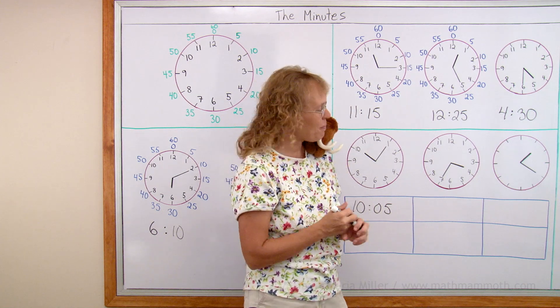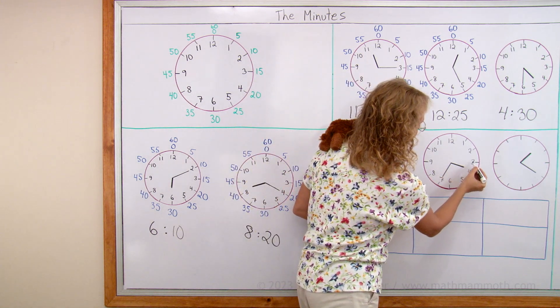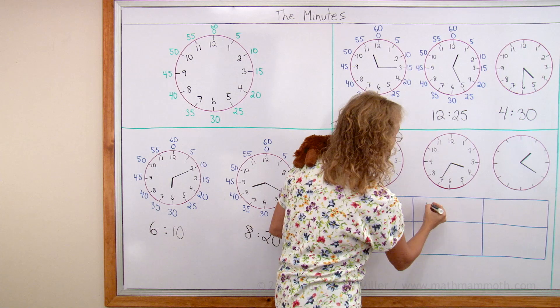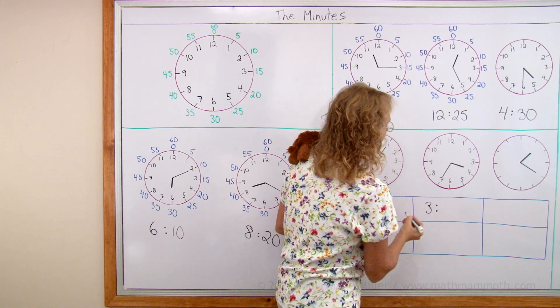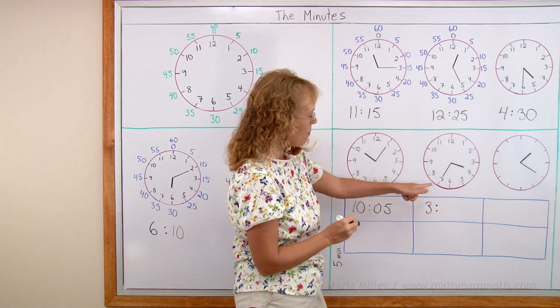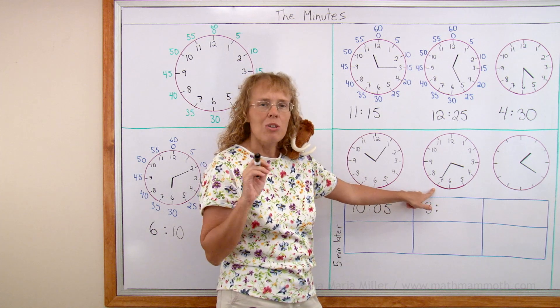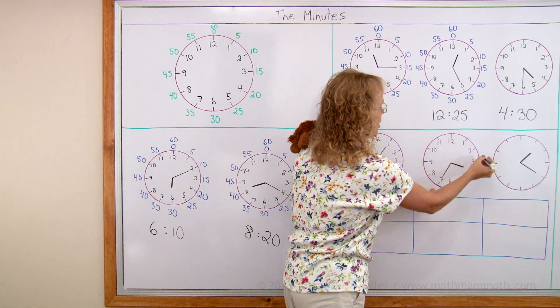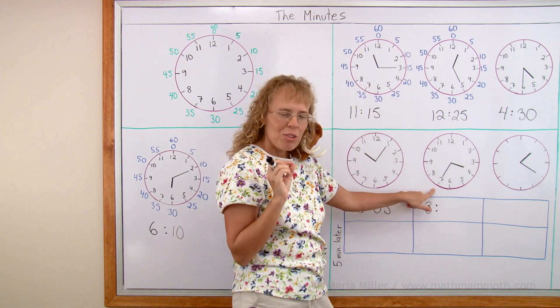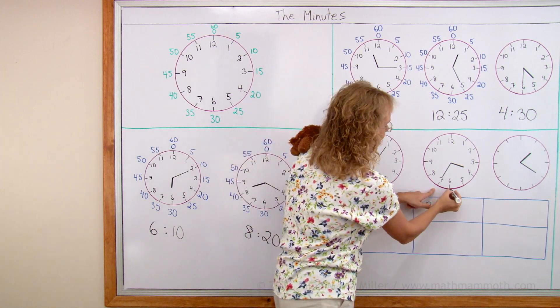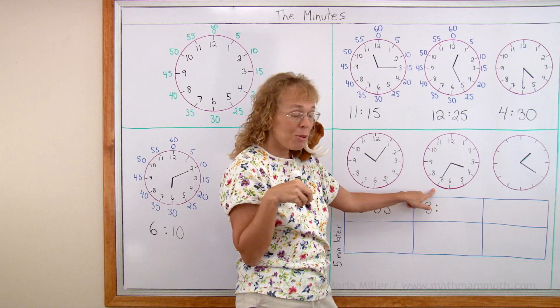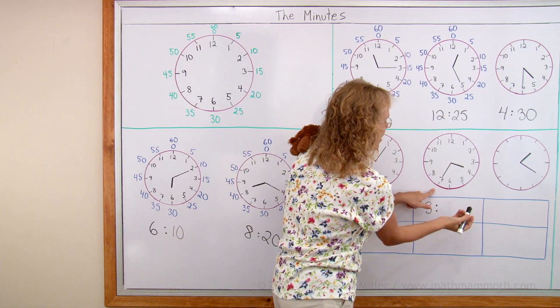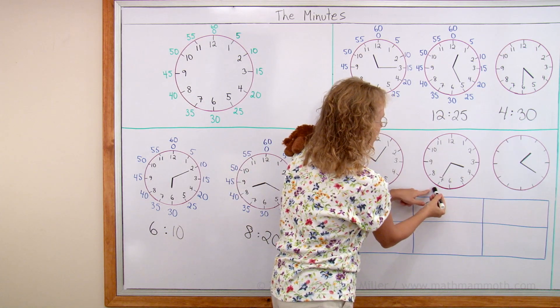How about this one? First the hour hand. It is between 3 and 4 so it is 3 hours. And then the minutes. You need to basically count by 5's all the way from here. 0, 5 and so on. But if you happen to remember that there is 30 right here. The half hour point is 30 minutes. Then it is easy to go 30 and 5 more. 35.